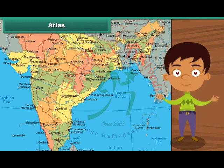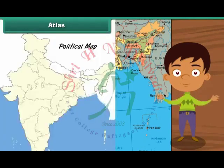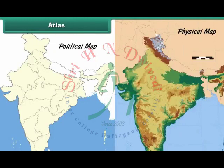Maps are of two types: political and physical. Let us learn about them in detail.